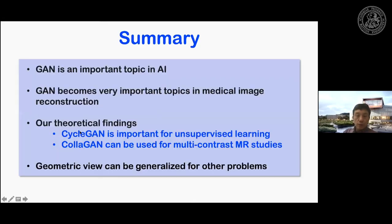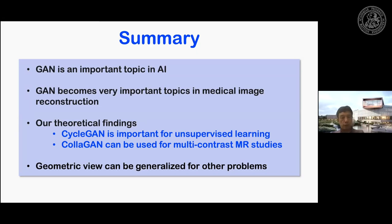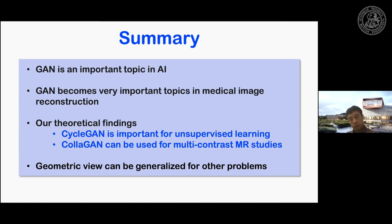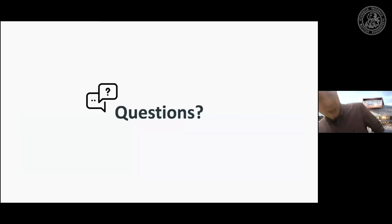In summary, medical imaging is a very important area for deep learning, especially for image reconstruction. For the many unsupervised learning scenarios in medical image reconstruction, GAN — and especially cycle GAN — is very useful as both a feedforward neural network inference tool and as a mathematically grounded framework. If you have multiple contrasts or multiple sources of information, the Collaborative GAN approach is quite useful. Thank you for your attention.